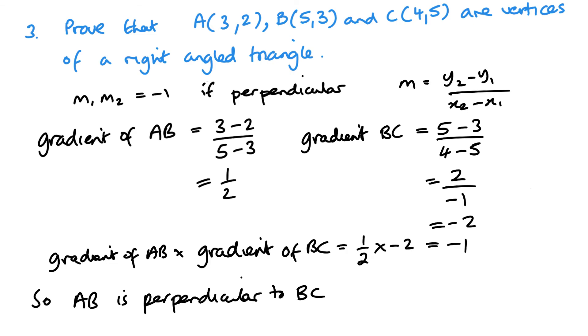So AB is perpendicular to BC. Therefore, the triangle is a right triangle. Therefore, triangle ABC is a right-angled triangle. And there's a nice statement just to tie it together at the end.